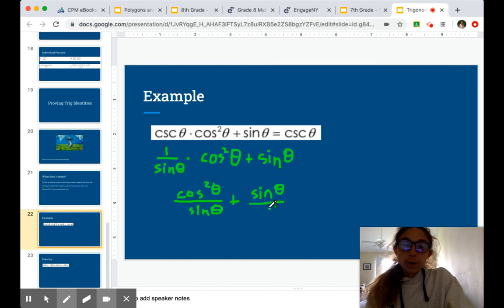And to do that, we're going to need some fractions. So if we were to add these two together, I'm going to have to multiply this numerator and denominator by sine theta so that we'll have a common denominator.